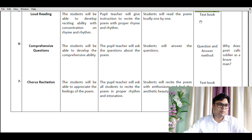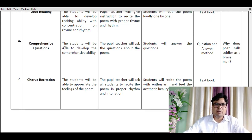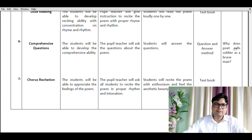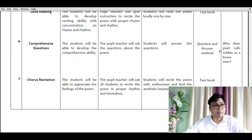The sixth teaching point is comprehensive questions. Students are expected to develop comprehensive ability — to understand the things in the poem. The pupil teacher will ask questions about the poem, written in the evaluation part, the last column of the table. This is the Socratic method: questioning and students answering. For example: Why does the poet call the soldier a brave man? Questions are framed from the text itself — do not go outside the text.